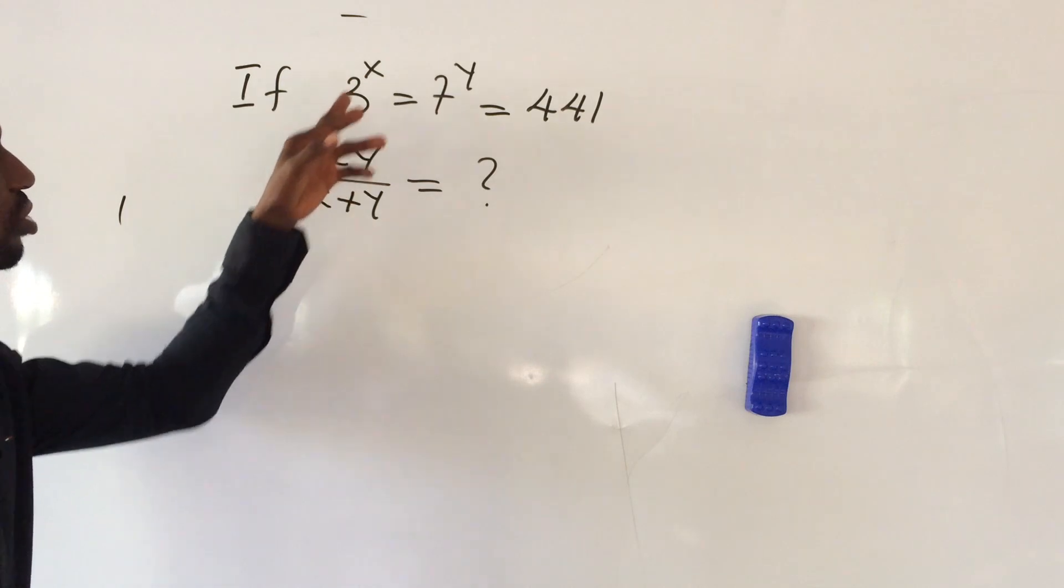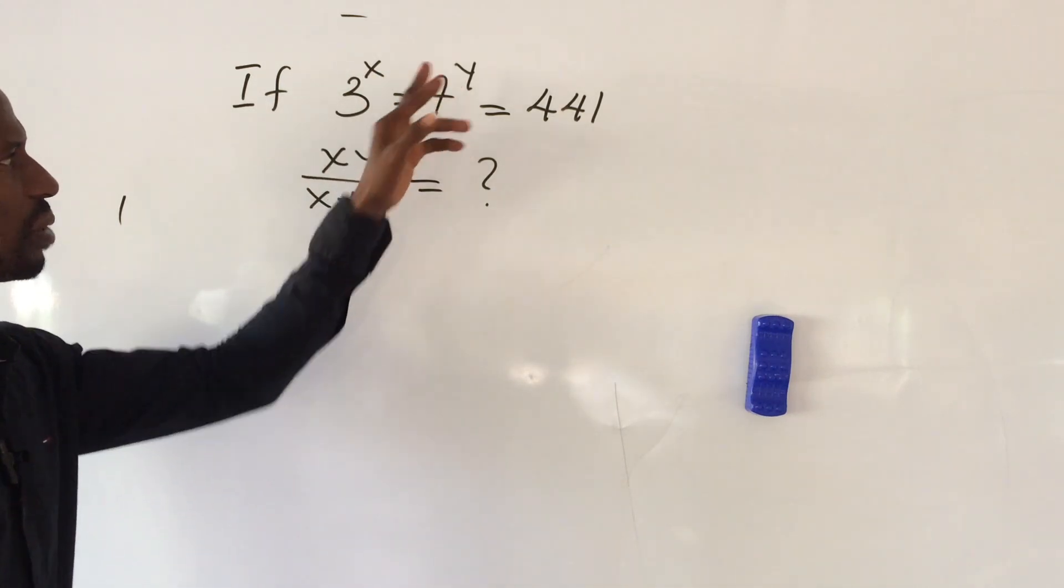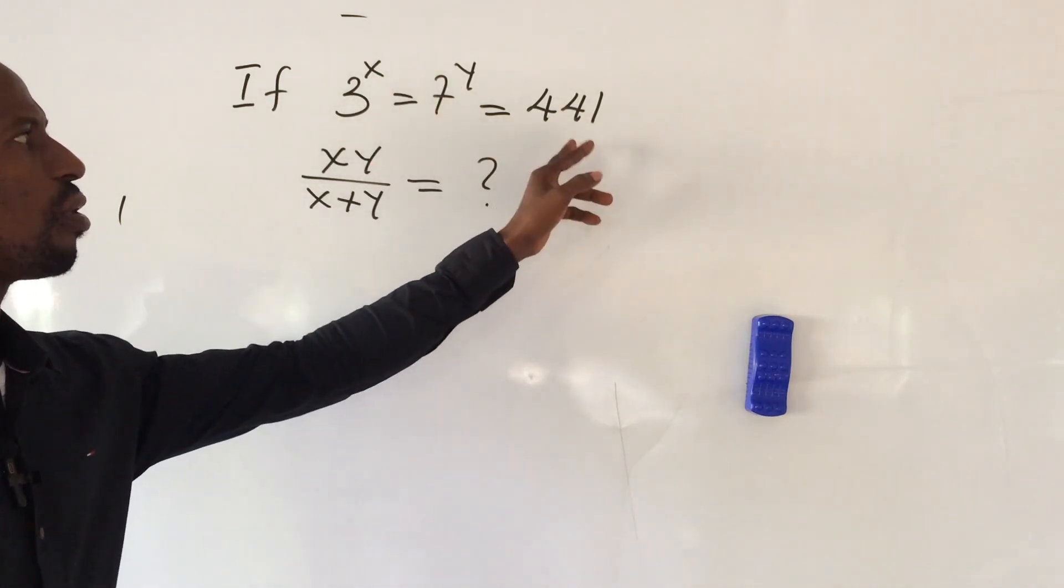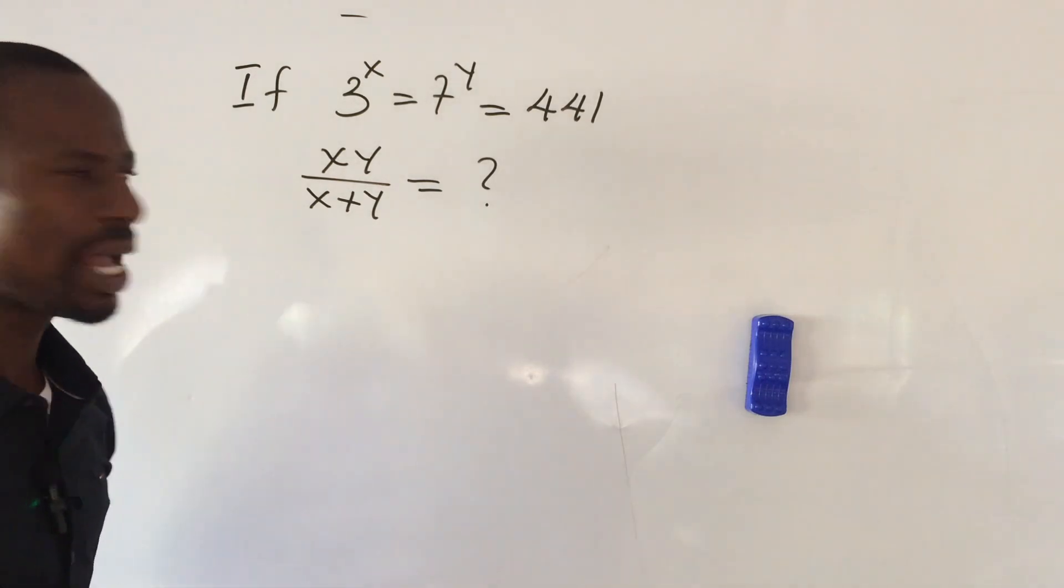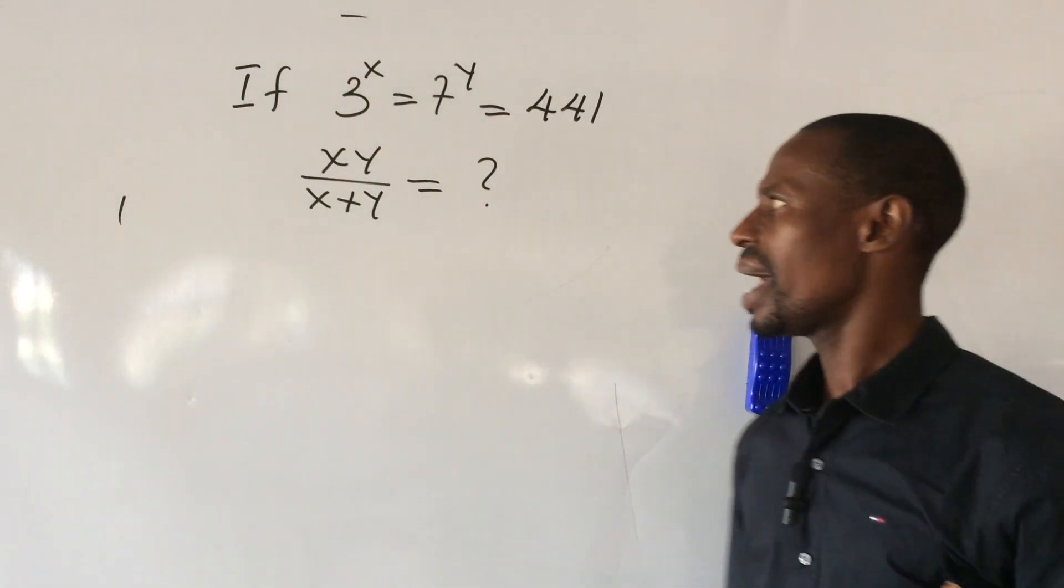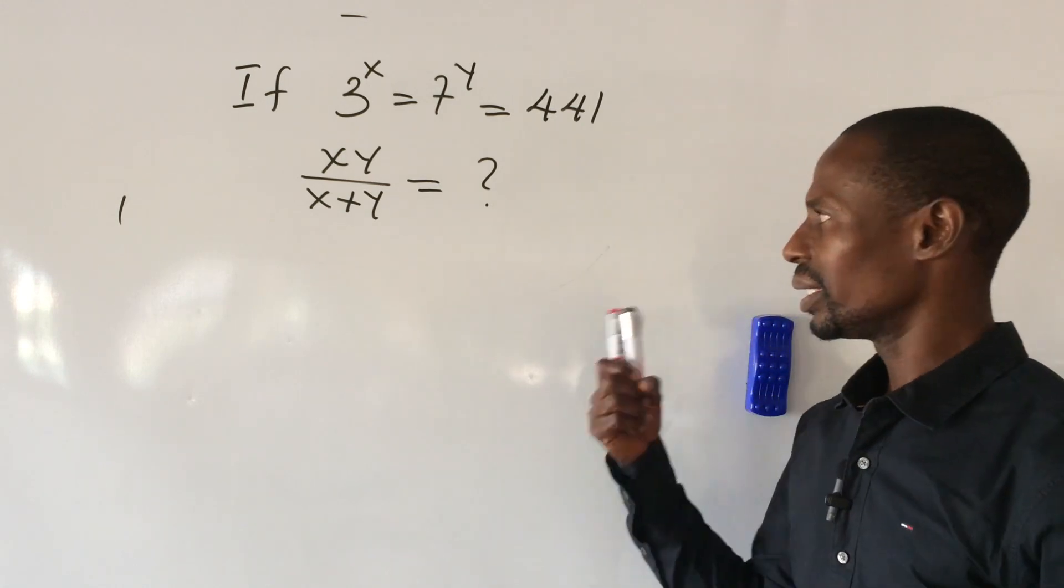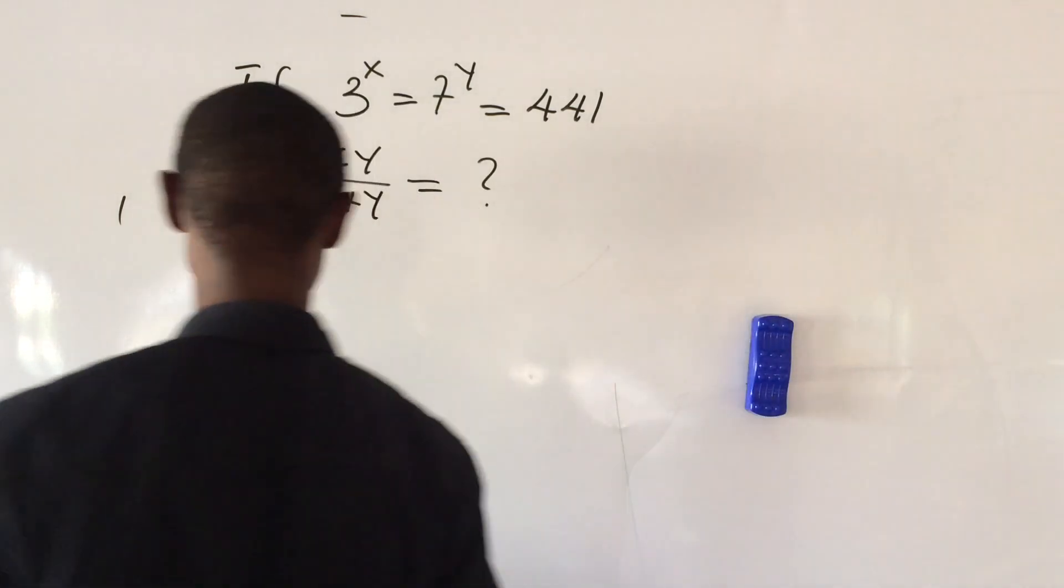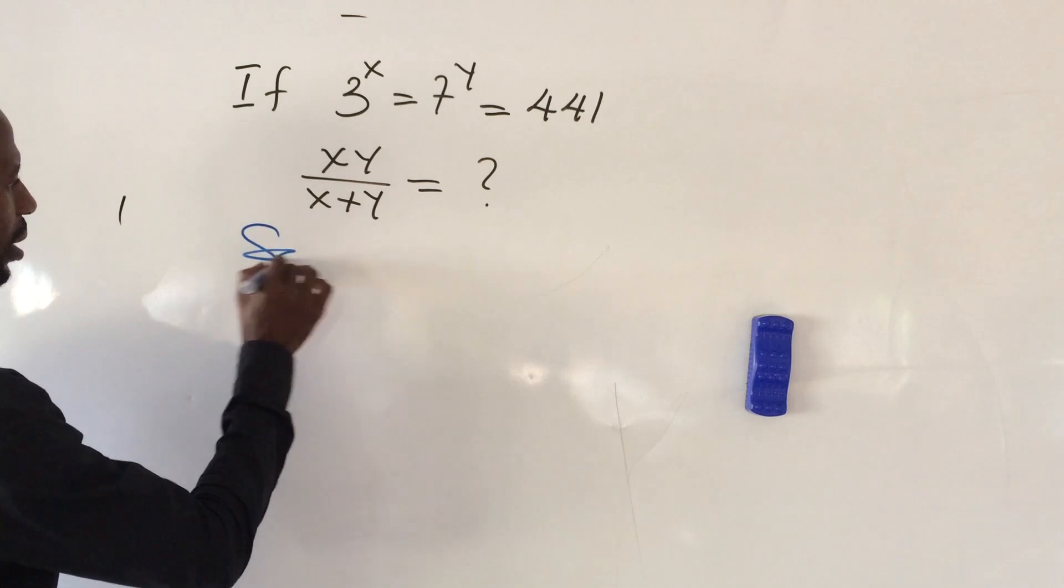So let's take the question and see what it is. The question says, if 3 to the power of x equal to 7 to the power of y or equal to 441, what then would be the value of xy all over x plus y? Then let's take our solution.